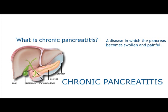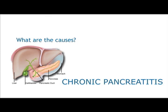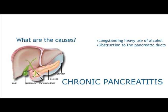Thickening of the pancreatic juices may result in clogging of the ducts and formation of pancreatic stones. Most cases of chronic pancreatitis are associated with long-standing heavy use of alcohol. However, chronic pancreatitis can also result from obstruction to the pancreatic ducts.